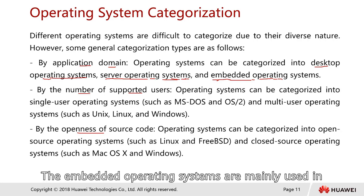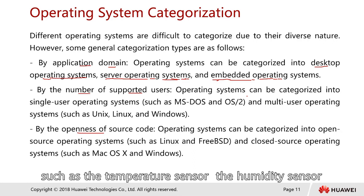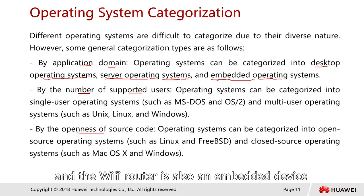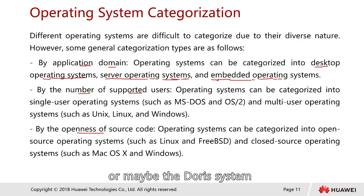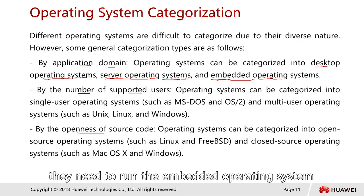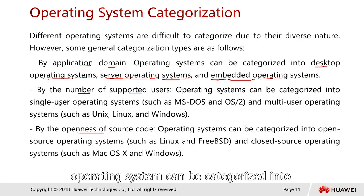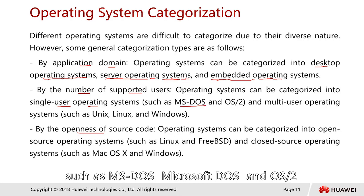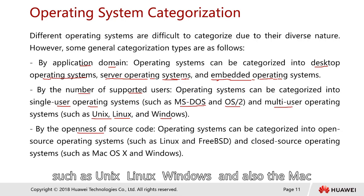Embedded operating systems are used for things like temperature sensors, humidity sensors, Wi-Fi routers, door access systems — small devices that need to run some type of operating system. By number of supported users, operating systems can be categorized into single-user operating systems such as MS-DOS and OS/2, and multi-user operating systems such as Unix, Linux, Windows, and Mac.